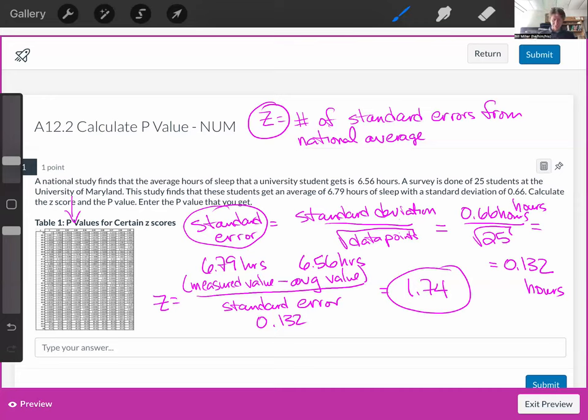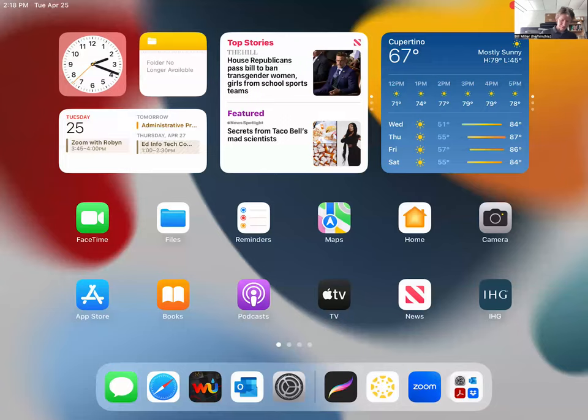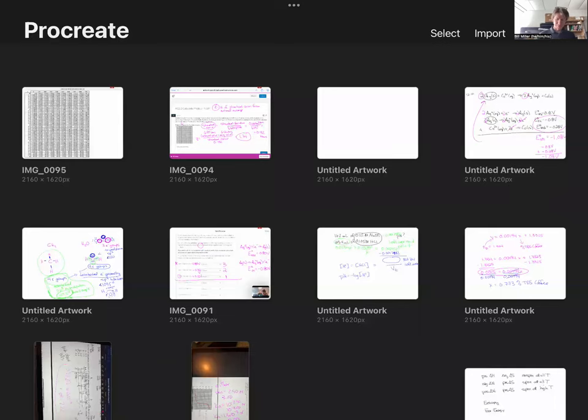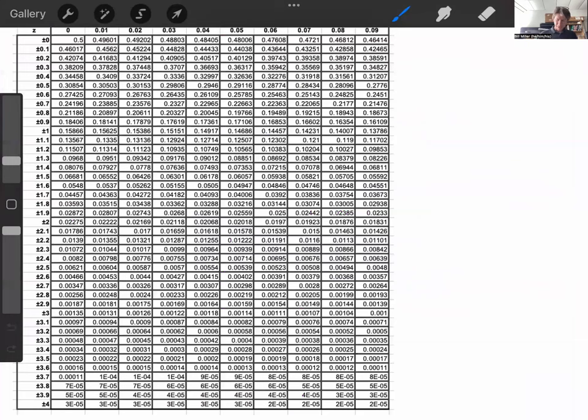Now, go to this table. I seem to have cut off my top here, but these are z values. There we go. That says they're z values, and I want plus or minus 1.7.